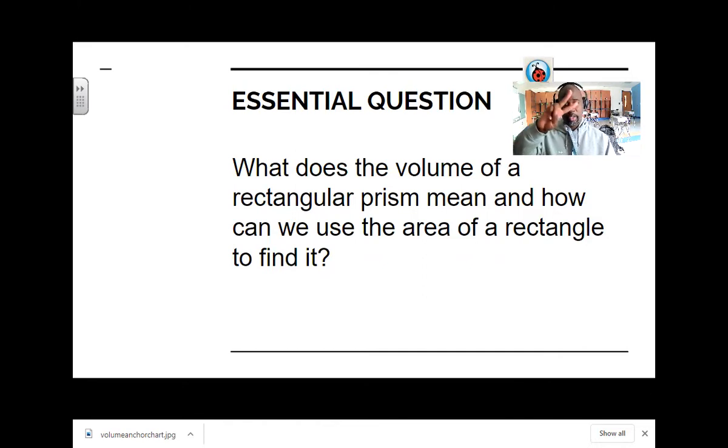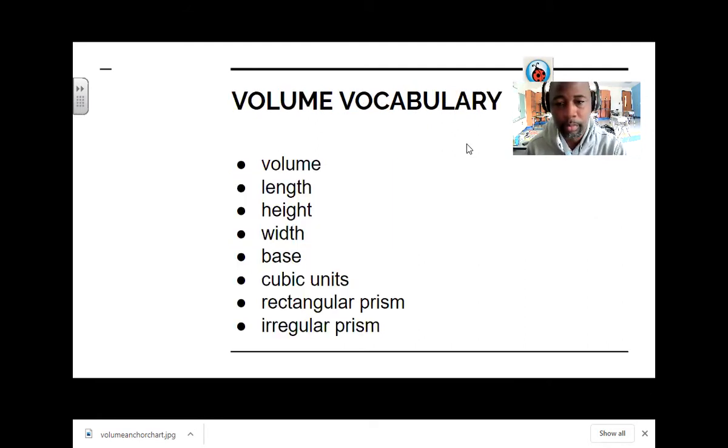This is a two-part question. By the end of this lesson, you'll be able to answer both of those questions. That's the goal. By the time you finish the lessons, the work, the assignments, watching the videos, you'll be able to answer both of those questions: What does the volume of a rectangular prism mean and how can we use the area of the rectangle to find it?